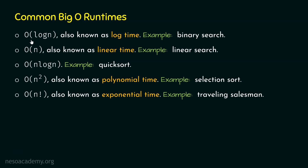These common big O runtimes are arranged in ascending order from top to bottom. This means log N is less than N, N is less than N log N, N log N is less than N², and N² is less than N factorial. To prove this, let's now visualize these runtimes.